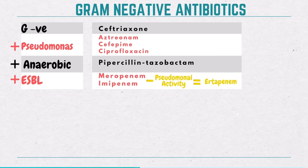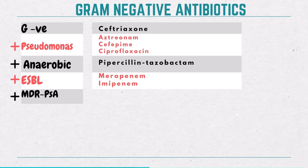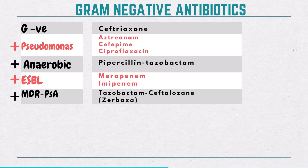Now it's time for the big guns — those antibiotics reserved for multidrug-resistant bacteria. For MDR-pseudomonas, a bacteria resistant to carbapenem drugs and beta-lactamases, the treatment option is the combination ceftolozane-tazobactam, also known as Zerbaxa. While Zerbaxa does provide some coverage against anaerobes, it is not the primary choice for anaerobic infections.